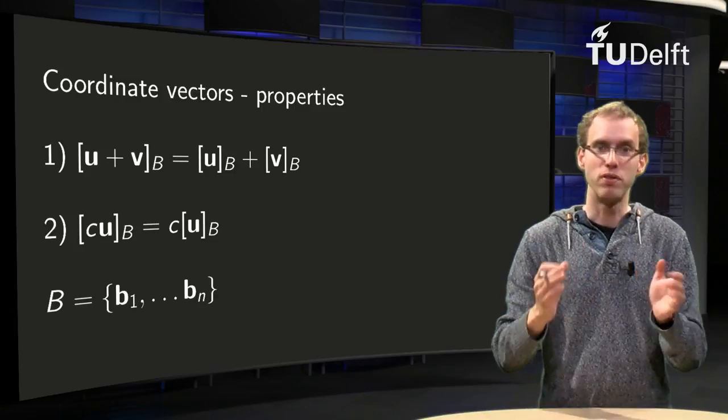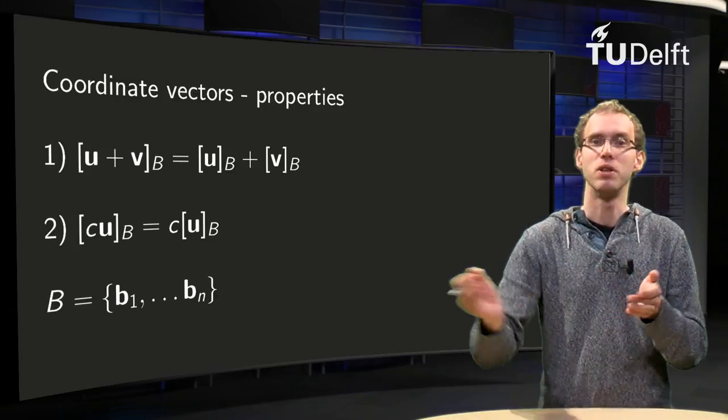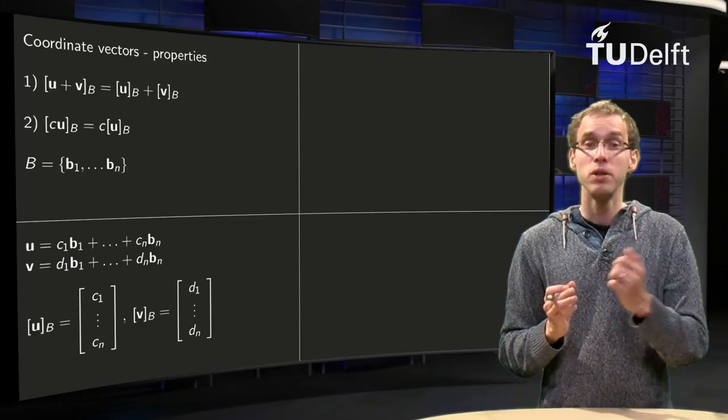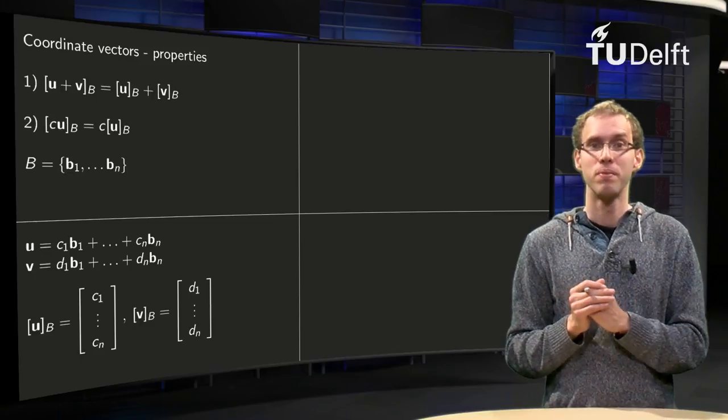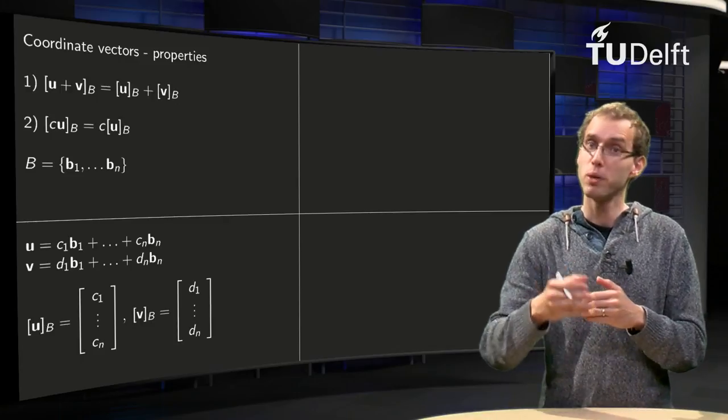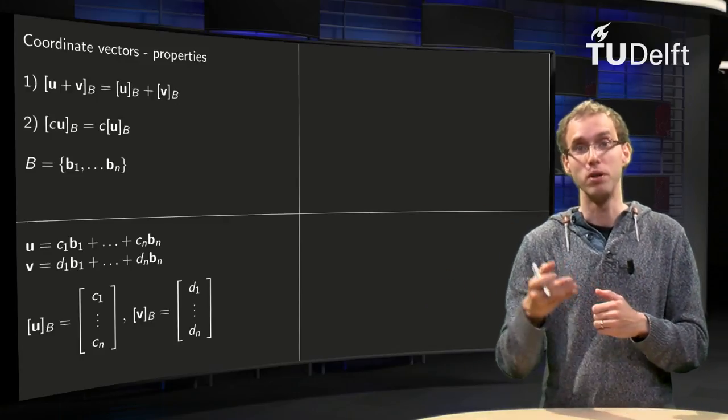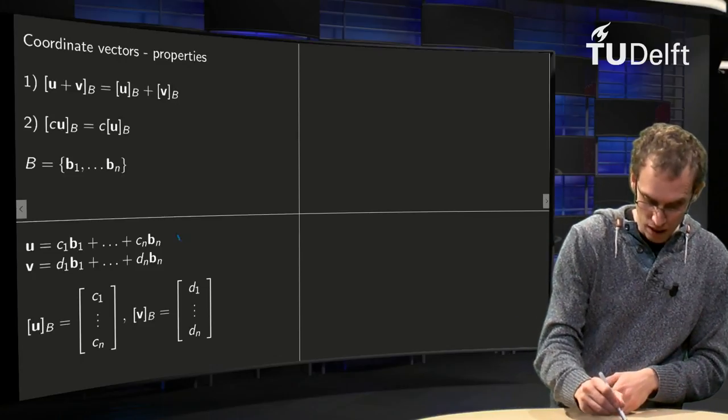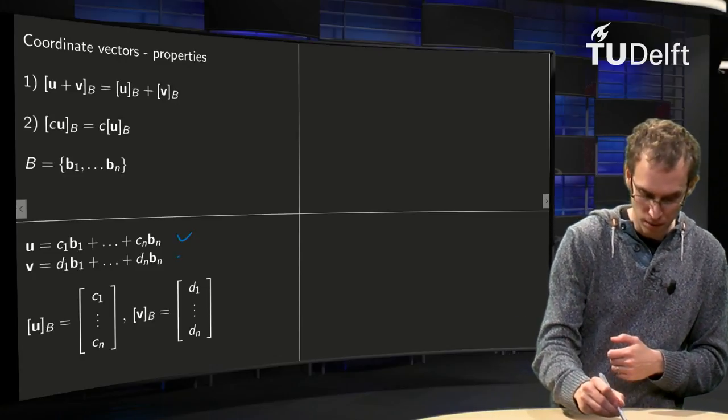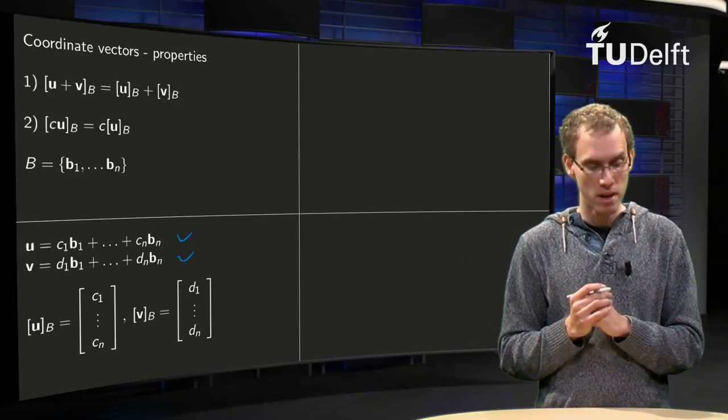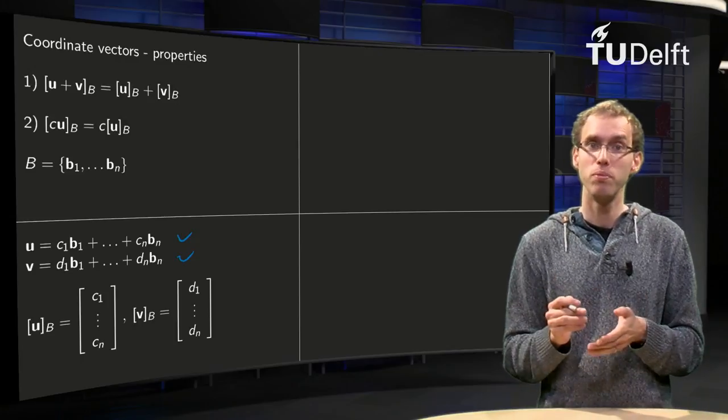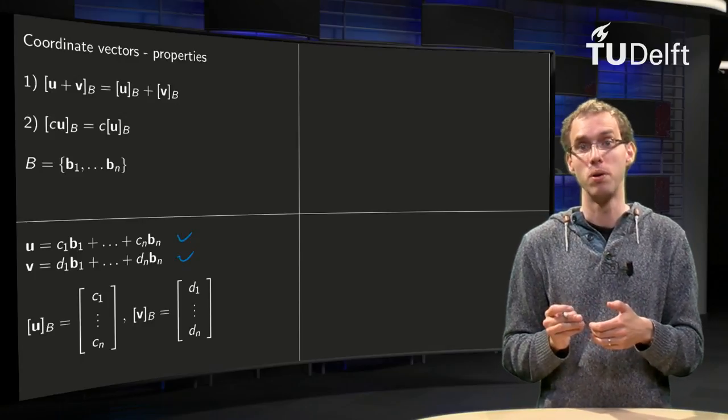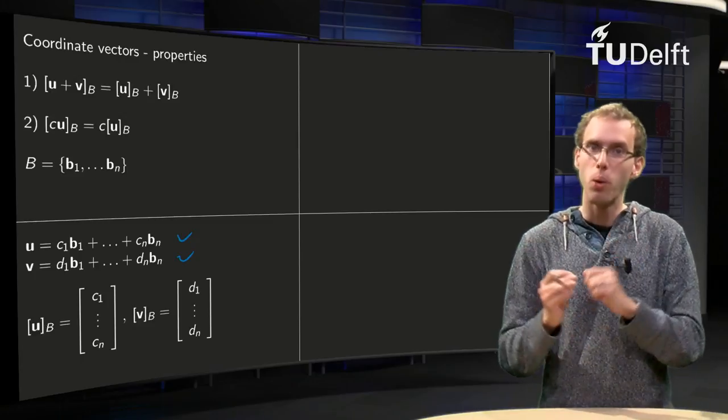But why is this true? Suppose we have some basis B consisting of b1 up to bn. Well, just write out what it means. That means that we have a u and a v. u can be expressed in terms of b1 up to bn, and v can also be expressed in b1 up to bn. And in general they will have different weights of course, so u equals c1 b1 up to cn bn, and v equals d1 b1 plus d2 b2 up to dn bn. So then we know the coordinate vector of u with respect to B contains c1 up to cn, and we know the coordinate vector of v with respect to B contains d1 up to dn.